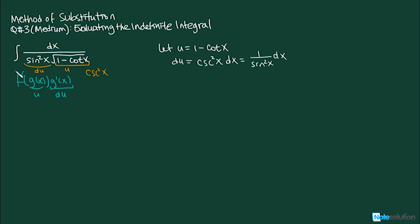We are ready to proceed. That will equal the indefinite integral, 1 over square root of 1 minus cotangent x times 1 over sine squared x dx. Now we can substitute with u, so this is going to equal the indefinite integral 1 over square root u, and in place of this whole thing we can plug in just du.